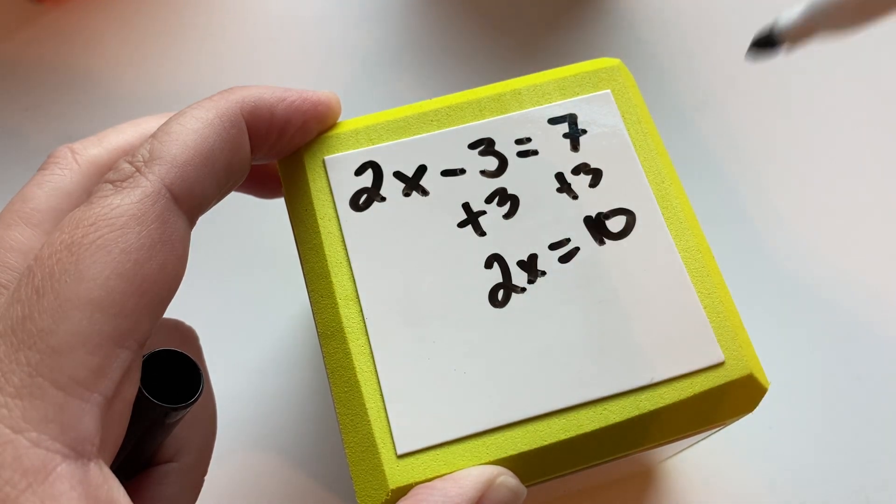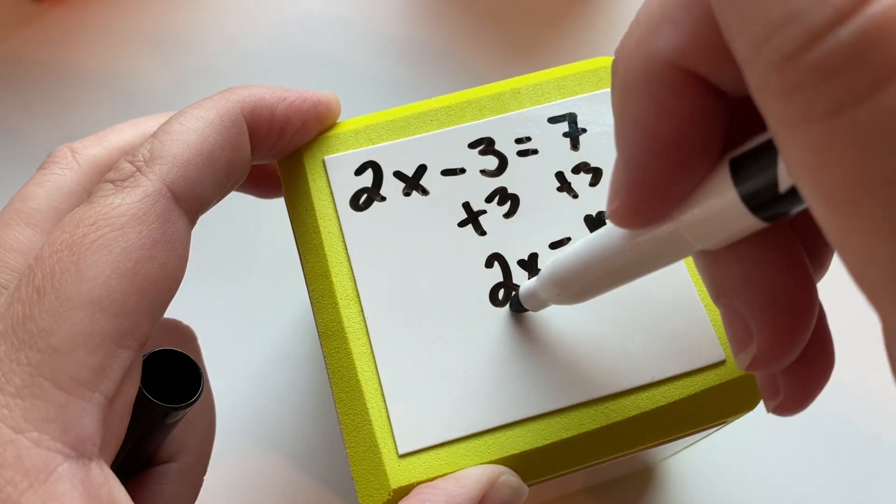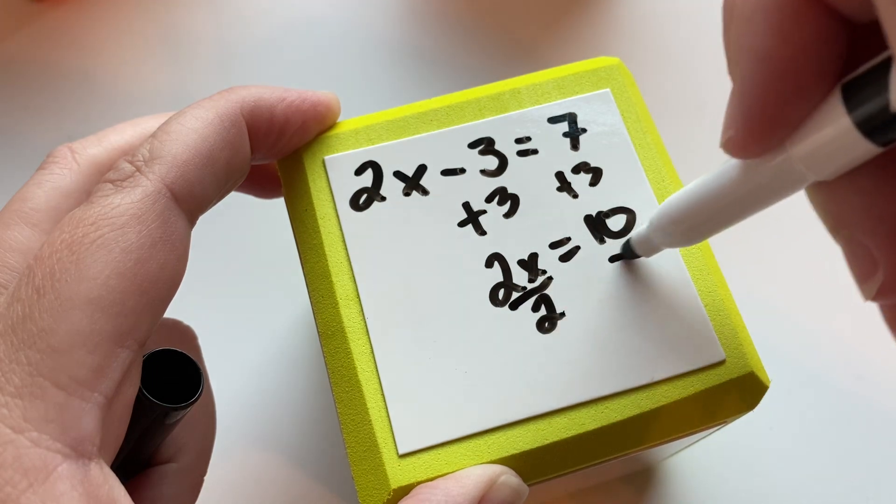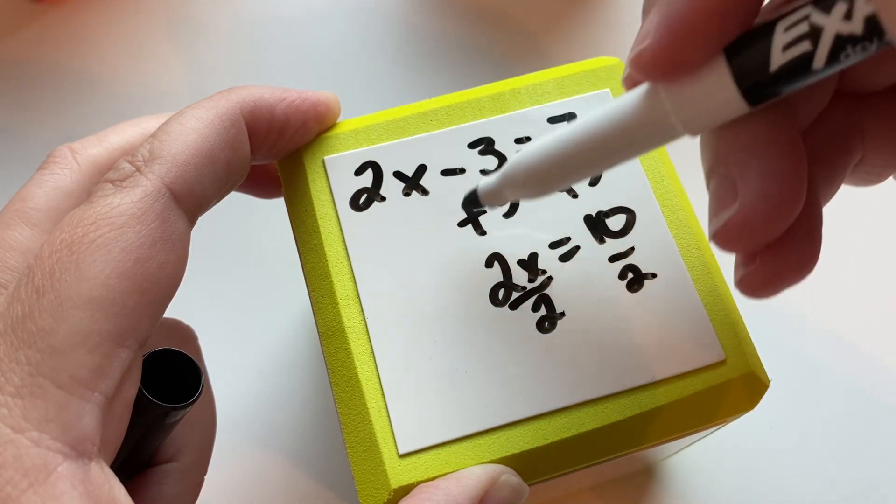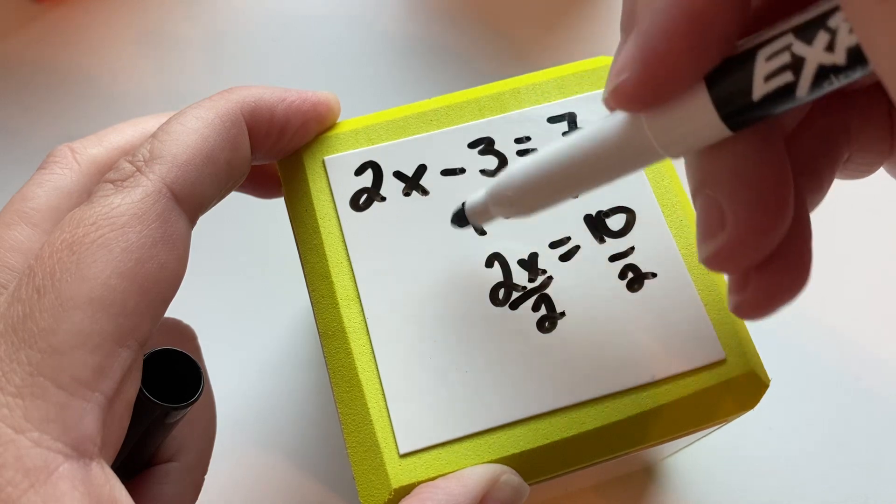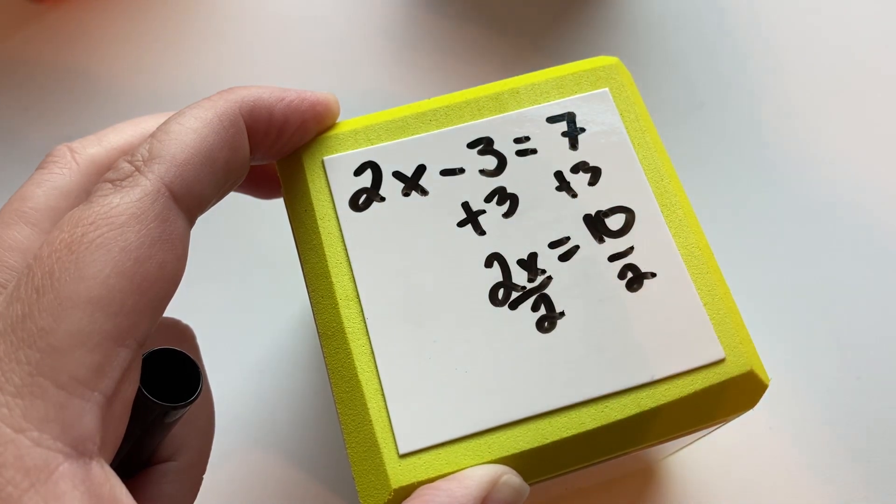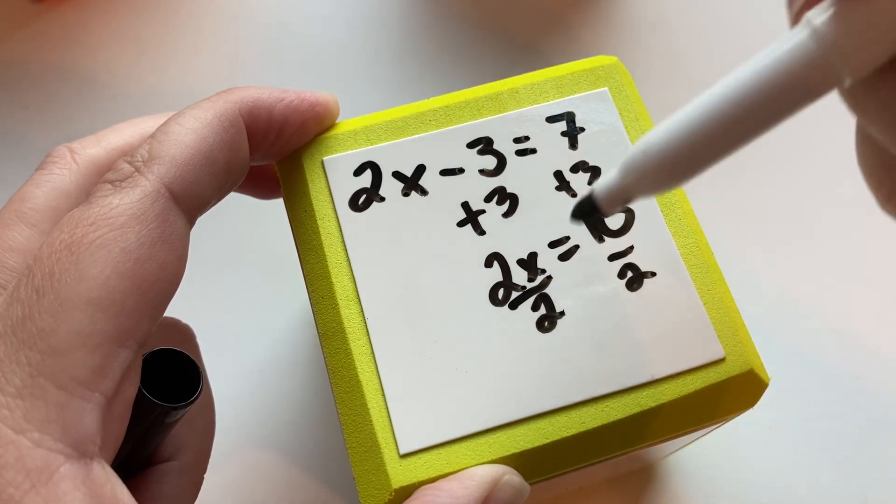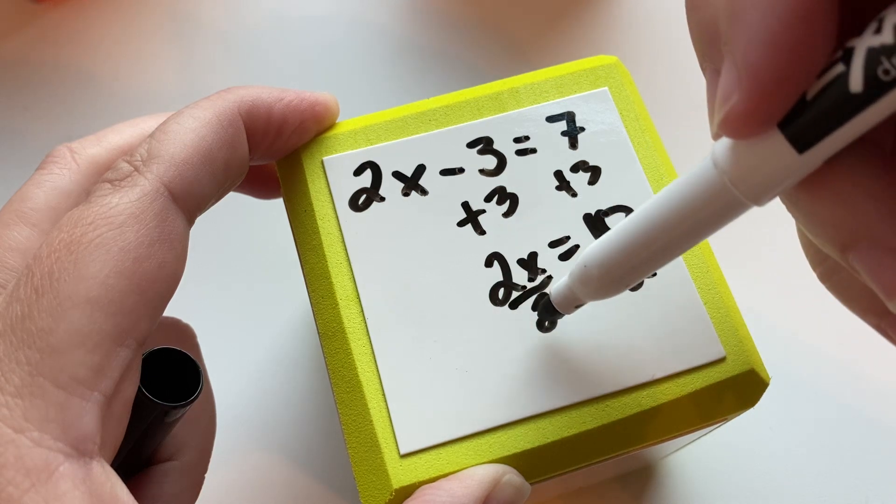Now we have two times x. The inverse operation would be dividing. So we're going to divide both sides by two. Negative three plus three equals zero. So that got canceled, as people like to call it. For me, I just think of it as it became zero.